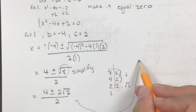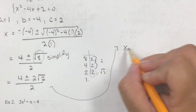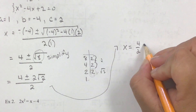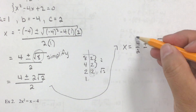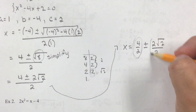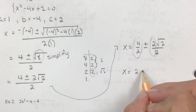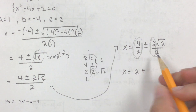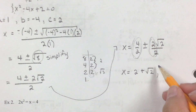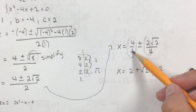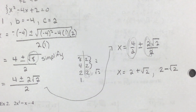Now you separate the parts: x equals 4 divided by 2, plus or minus 2 times the square root of 2, divided by 2. Separating them so you know you divide both parts by 2: x equals 2 plus the square root of 2, and 2 minus the square root of 2 — since 4 divided by 2 is 2 and 2 divided by 2 is 1. Those are your two answers.